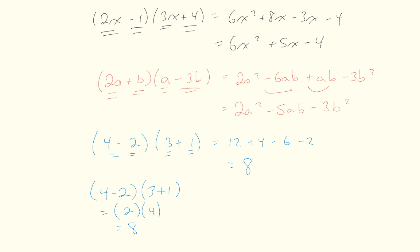Getting the same answer either way is one indication that FOIL is correctly simplifying an expression. In the coming weeks, we'll practice the reverse process: given a quadratic expression, figuring out what two binomials it came from. We call that factoring a quadratic expression to get back to the two binomials that multiply to give it. That's it for this lesson — you have that to look forward to!